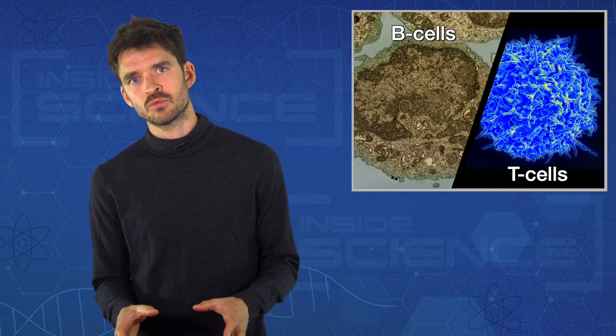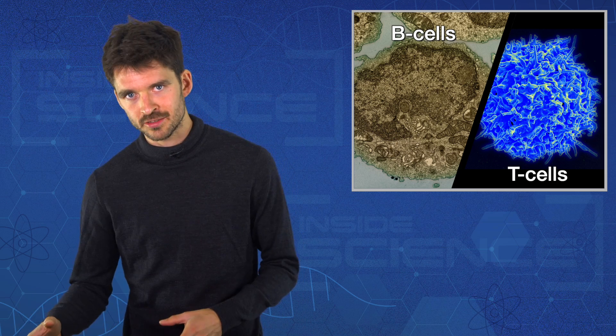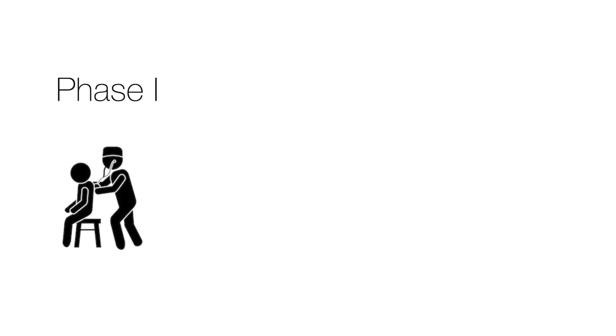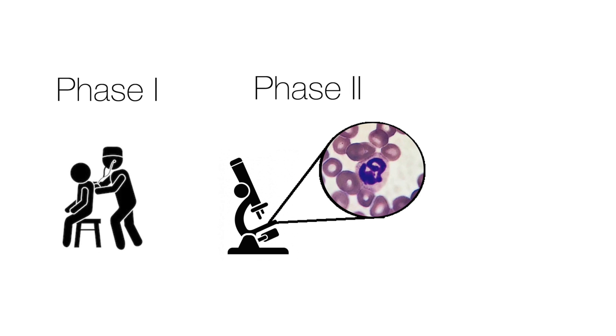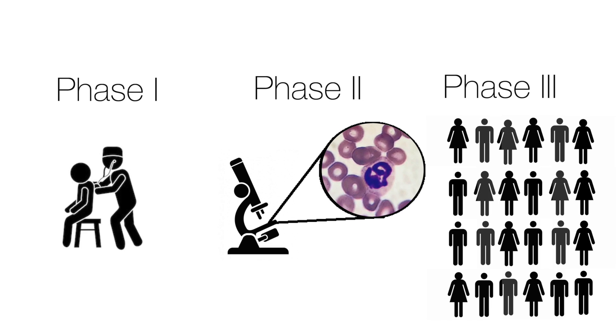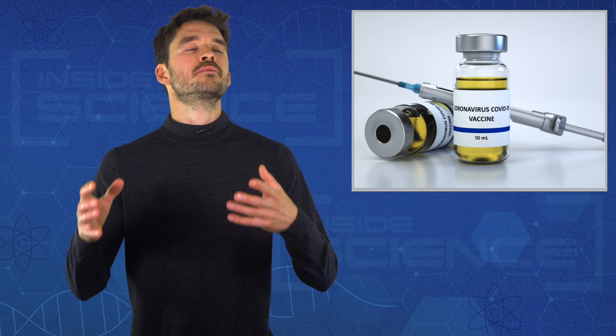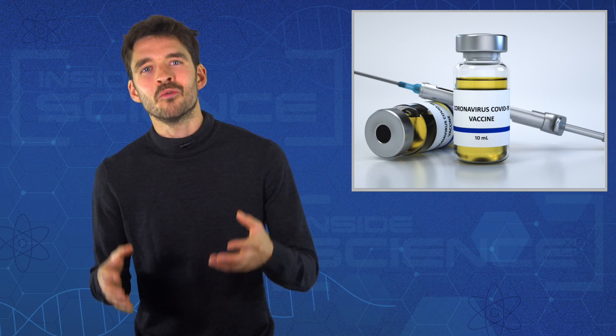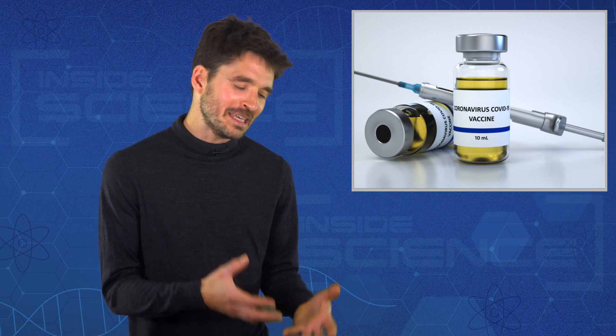So these studies were phase one and two trials. They tested whether the vaccines were safe in humans and whether they were having the right kind of biological effect on the immune system. In phase three, which comes next, they'll test the vaccines on large groups of people to see if they actually protect against COVID-19. But we still don't know when they'll be ready for public use.